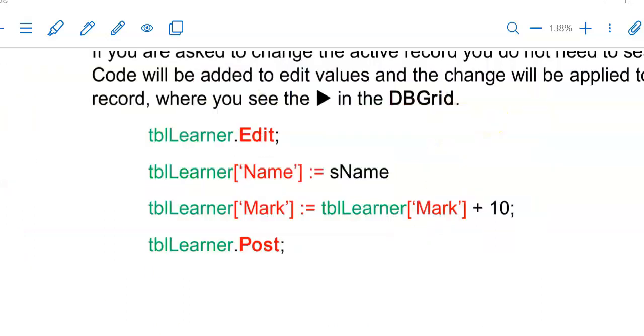So you could be asked to simply make a change to the active record. That is where you see this triangle in your DB grid. Therefore there's no need to search for anything because it's just where this little pointer is pointing to in your DB grid. You're going to make a change to that record.